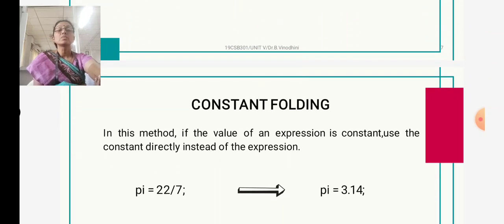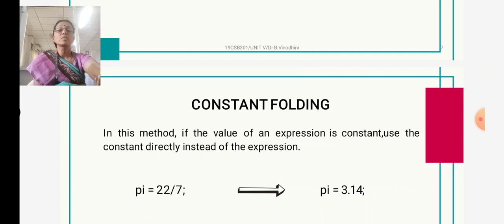Next is constant folding. Constant folding means: suppose you are using any expression with constants — instead of using the expression, we use the constant result directly. For example, the value of pi is 22/7. Instead of using that division expression, we use the constant value 3.14, because the cost of evaluating a division operation is higher than a constant assignment.